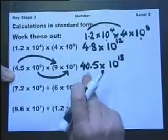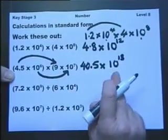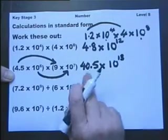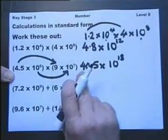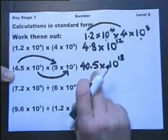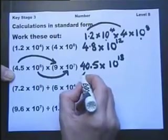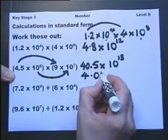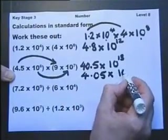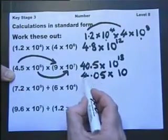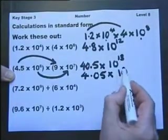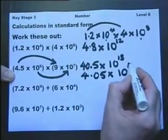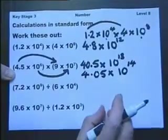However, this answer is not in standard form. To be in standard form, this part of the answer must be between 1 and 10. So we'll rewrite this as 4.05. But in doing so, we've made this 10 times smaller, so we'll have to make an adjustment here. Make that 10 times bigger by adding 1 power of 10.